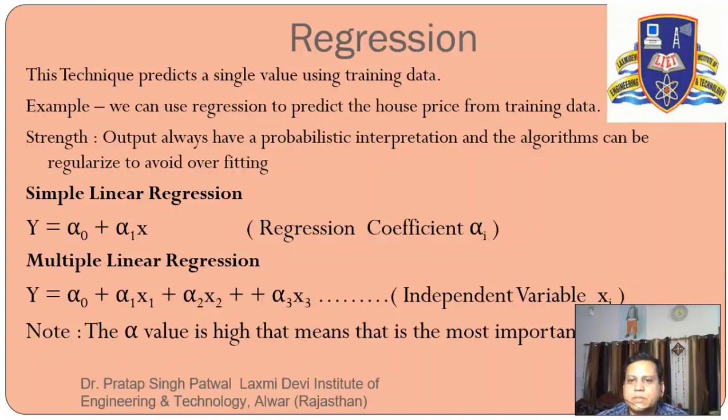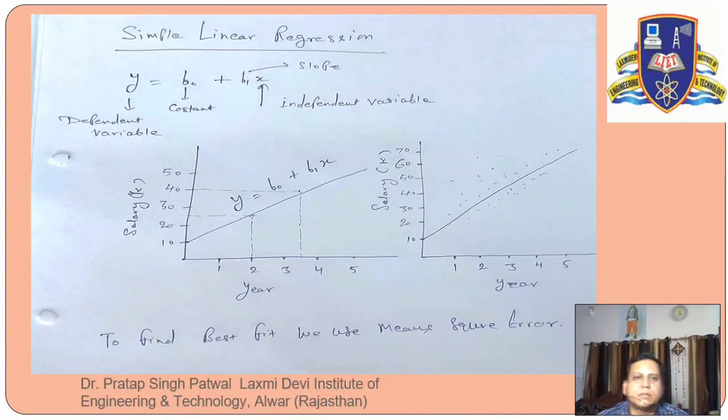The independent variable here is xi and it is important to note if the alpha value is high, that means it is the most important one. Now we will learn simple linear regression with the formula y equal to mx plus c.